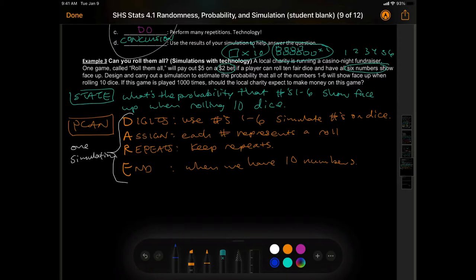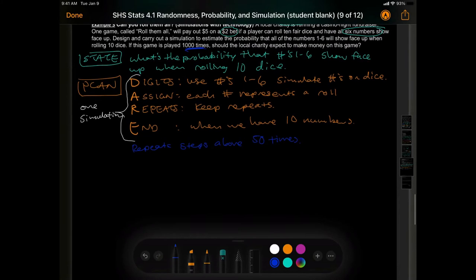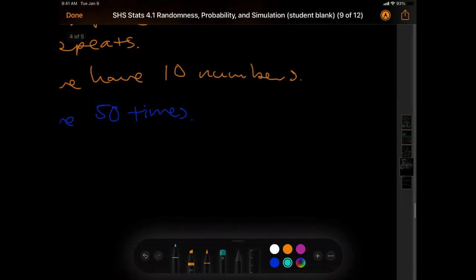And you might want to repeat it. What does it tell us? We might have to do a thousand times. So, do I really want to do this a thousand times? No. So, I might want to do this repeat steps above 50 times. Alright. So, I'm going to do this maybe let me make a chart here. Let's see how much space I have. Let's do it over here. Okay. So, I'm going to call this repetition 1, 2, 3, 4, 5, 6.